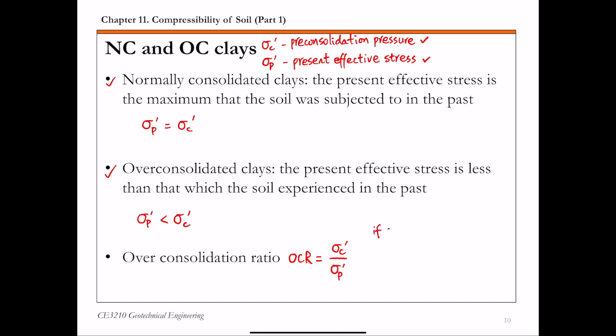If OCR is equal to 1, this means the clay is NC or normally consolidated clay. If OCR is greater than 1, that means the clay is OC clay, overconsolidated clay.